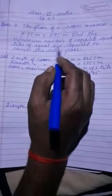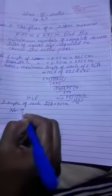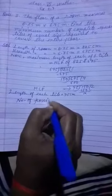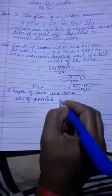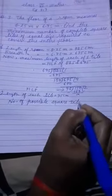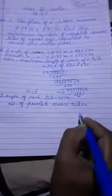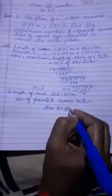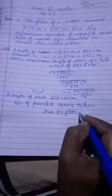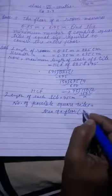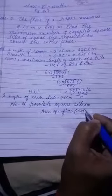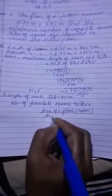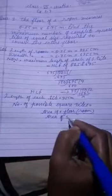According to the question, now you have to find out the required tiles to cover the entire floor. Number of possible square tiles equal to area of floor upon area of one square tile.